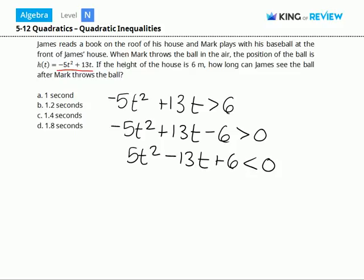And then upon factoring, we get 5t minus 3 times t minus 2 is less than 0.